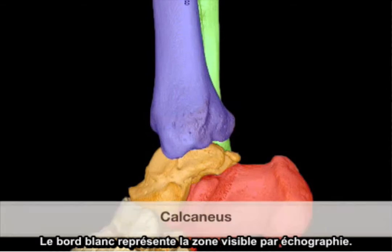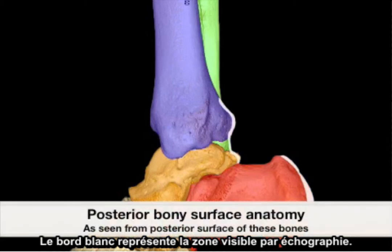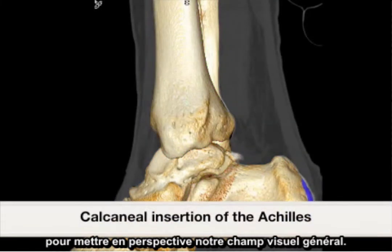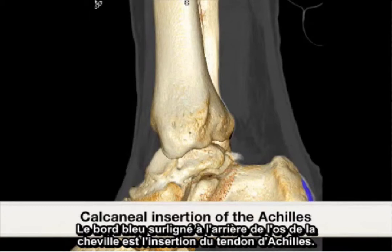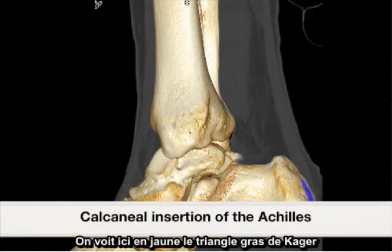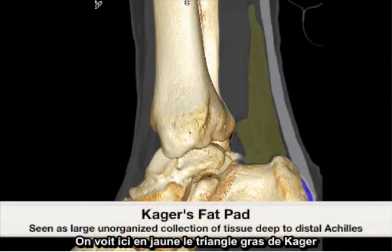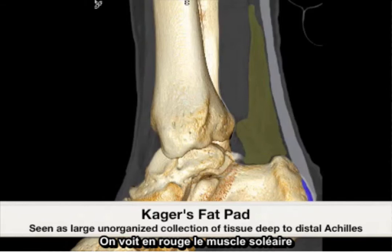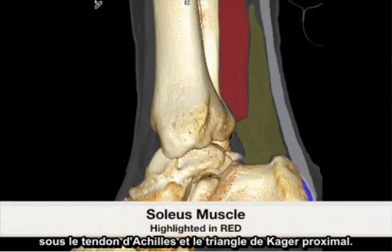This white rim represents the viewable surface anatomy by ultrasound. Here is a superimposed CT scan at the mid-sagittal line of the posterior ankle to put into perspective our general field of view. The blue rim highlighted at the posterior calcaneus is the actual insertion of the Achilles tendon. Highlighted in yellow represents Kager's fat pad as an unorganized collection of tissue deep to the Achilles tendon. The red indicates the soleus muscle, which is deep to the Achilles tendon and deep to the proximal Kager's fat pad.